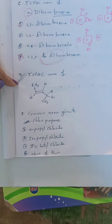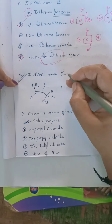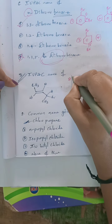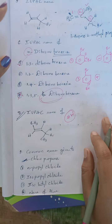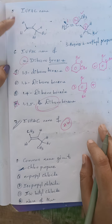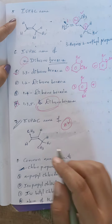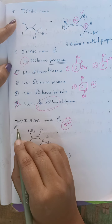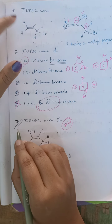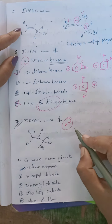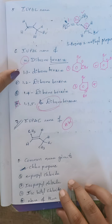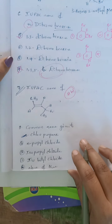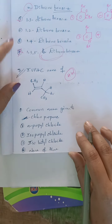The next question is similar to the fifth question — it is given as homework for you. Seventh question is also similar; try to write the IUPAC name of that compound.